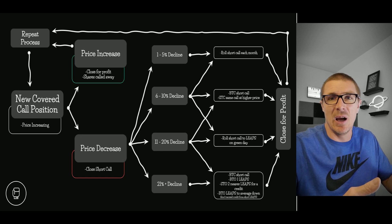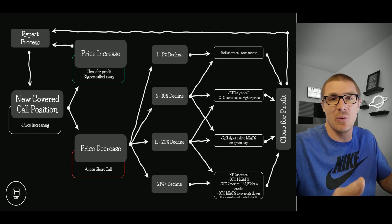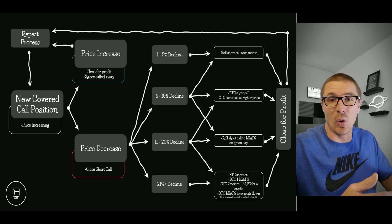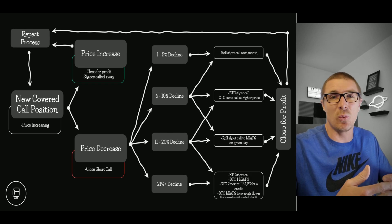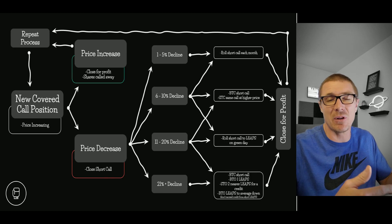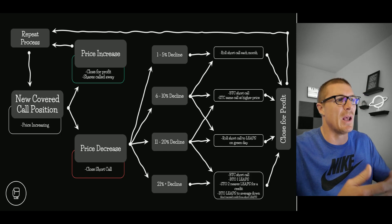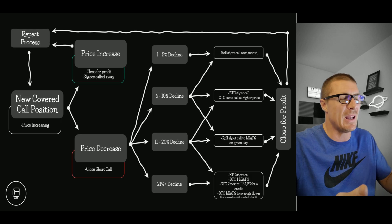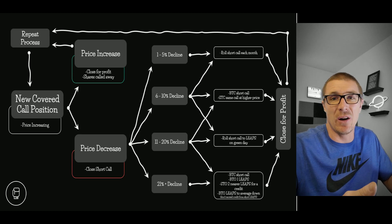You can start the process again with whatever percentage return makes sense — five percent, ten percent, whatever. You'll have to adjust and set up the position accordingly. I normally sell the near month call; occasionally if I'm holding the bag I may go out further. These are steps I generally take, but sometimes the market doesn't allow for it. If price decreases, like anything in life when there's a problem you have to do some work. I've broken it down into different levels: one to five percent, six to ten, eleven to twenty, and anything greater than twenty percent.